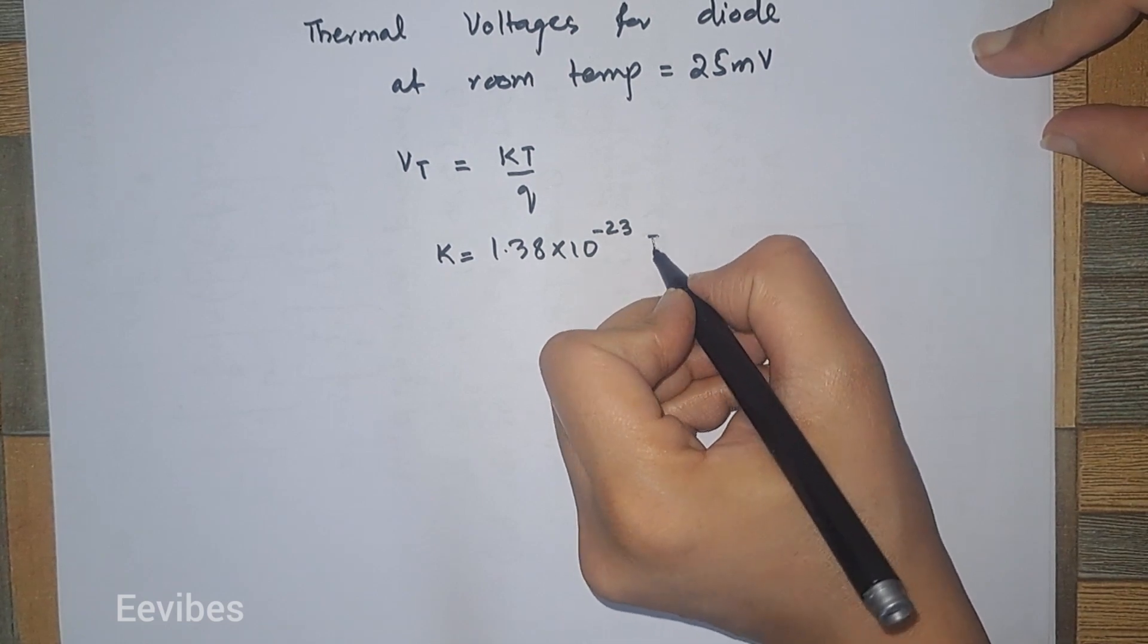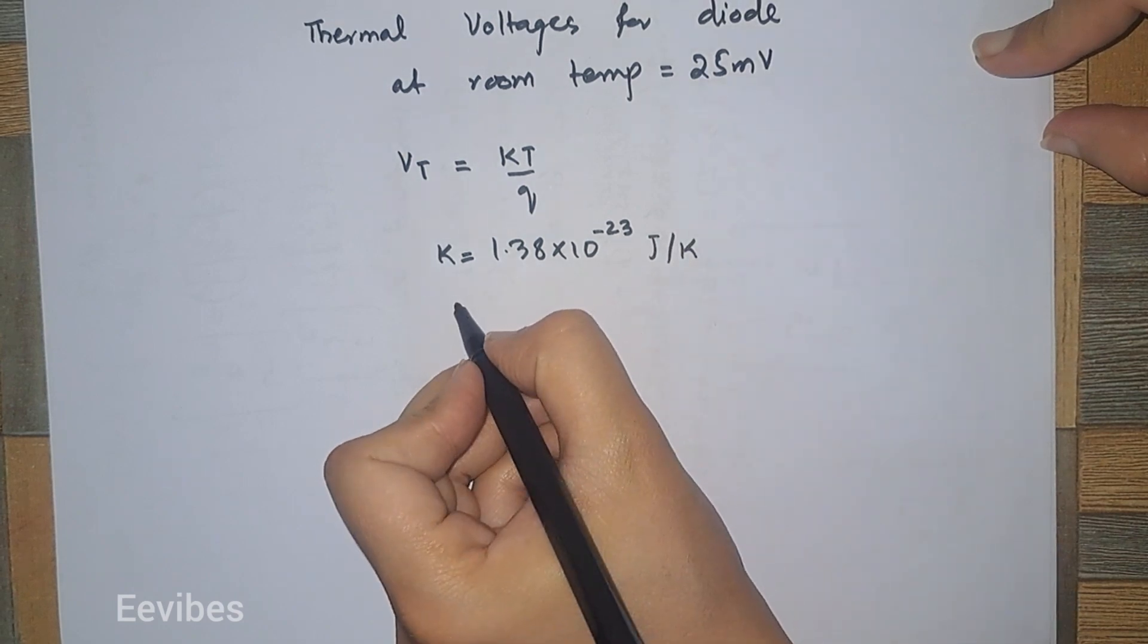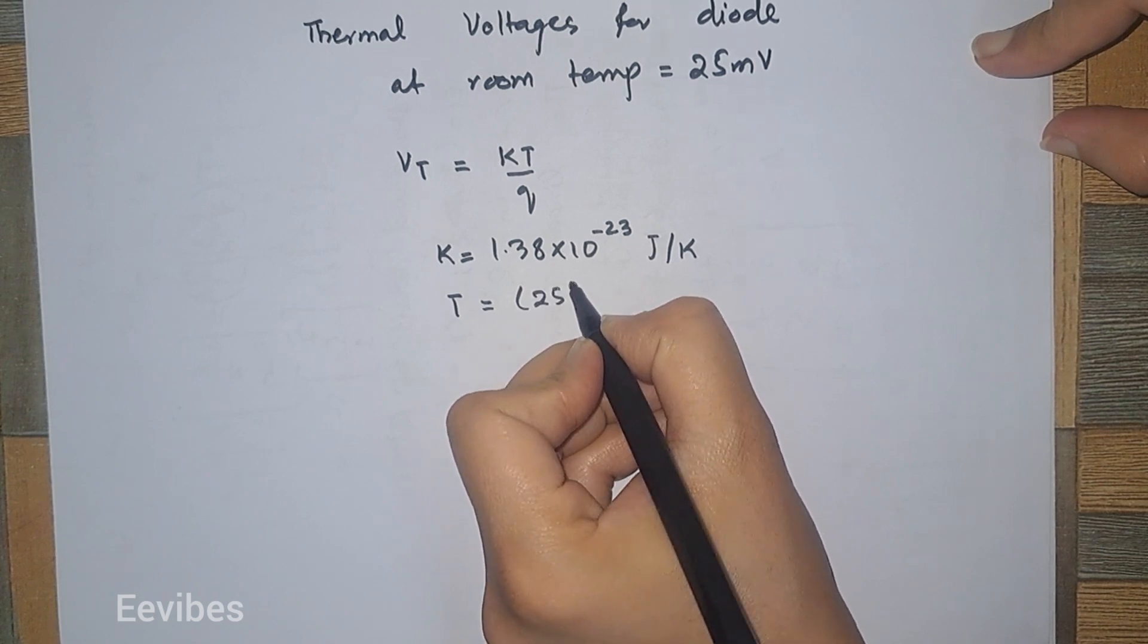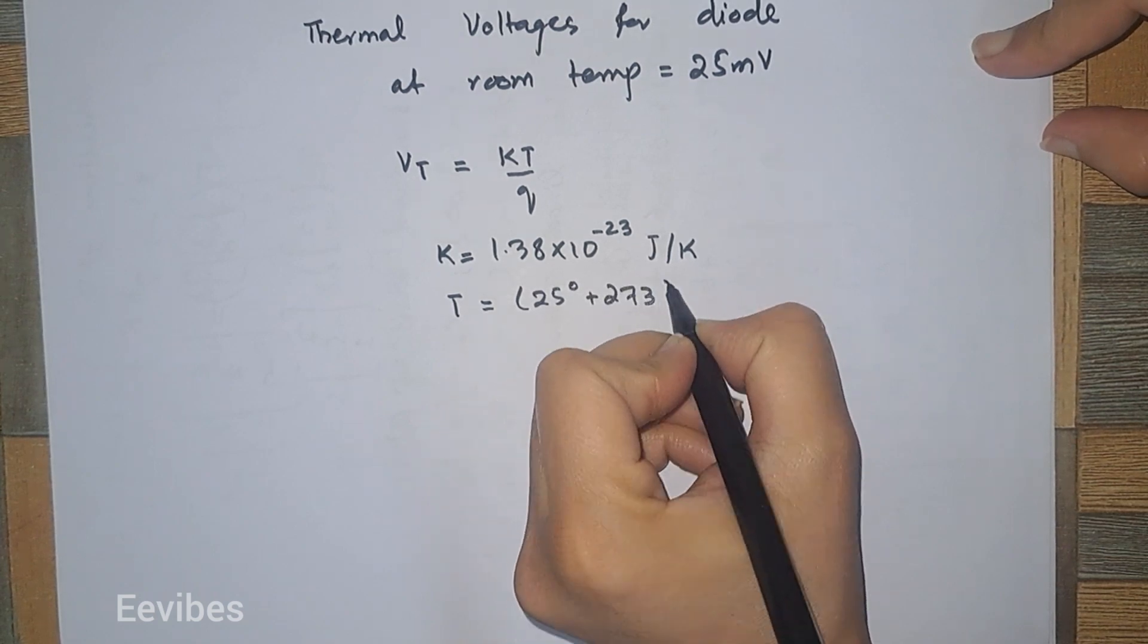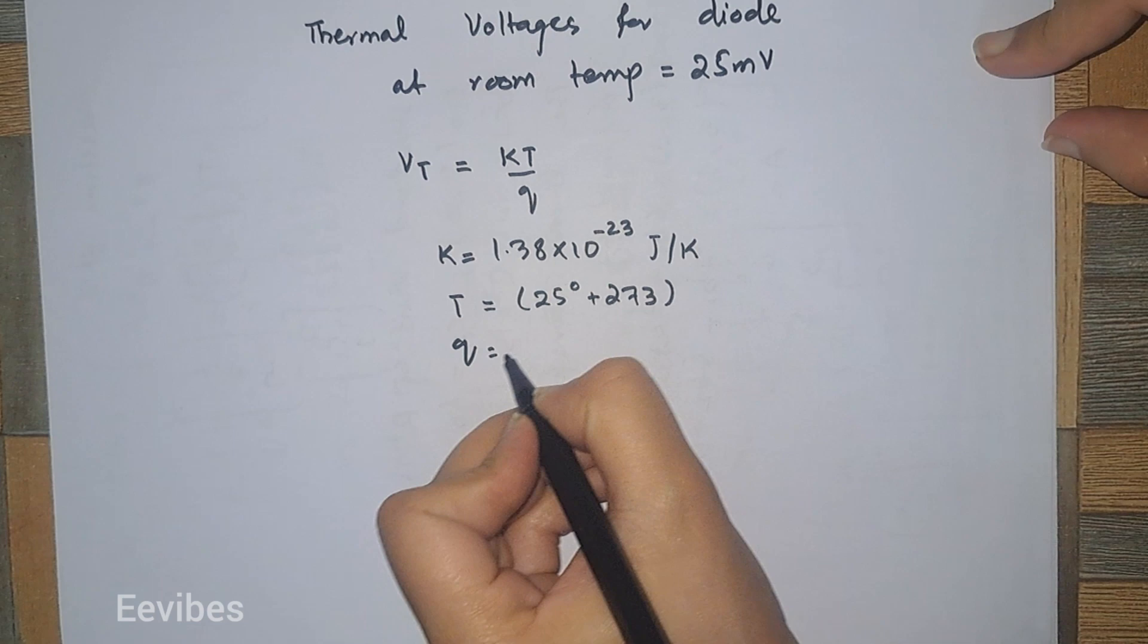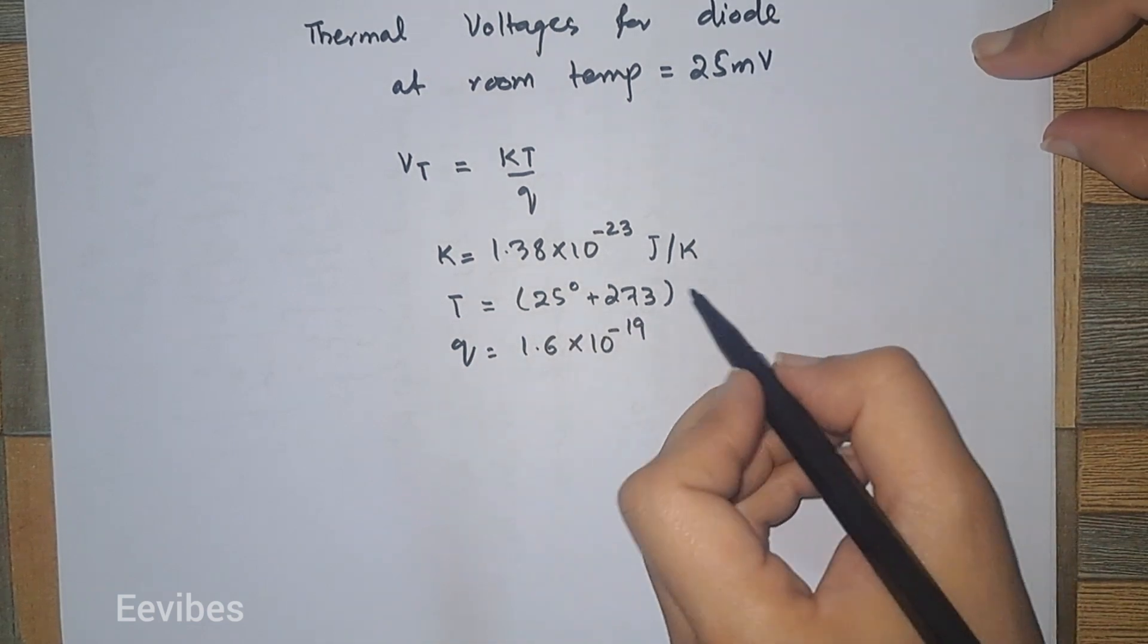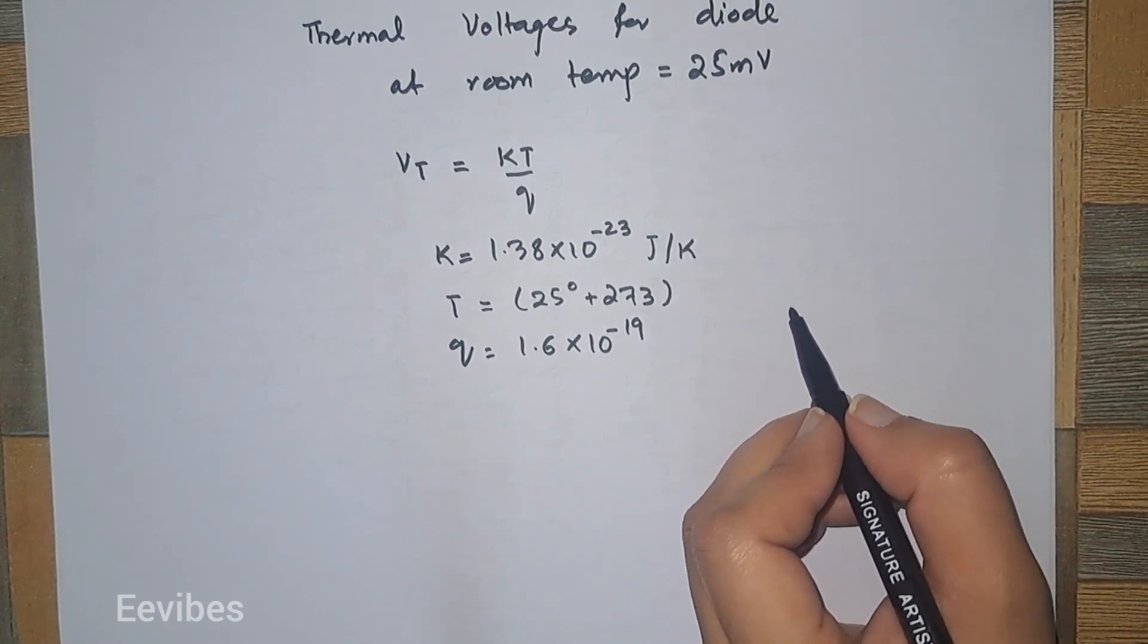Then temperature should be represented in Kelvin, so room temperature is 25 plus 273. And the charge on the electron is 1.6 into 10 raised to power minus 19. Once you substitute these values